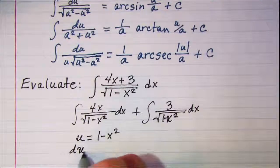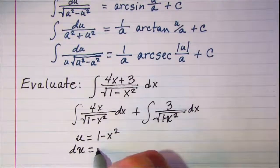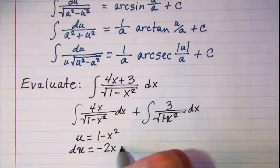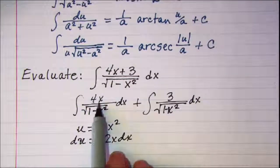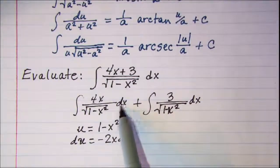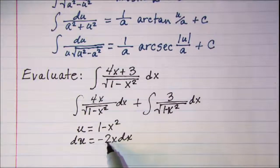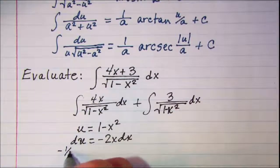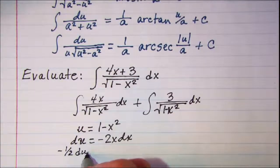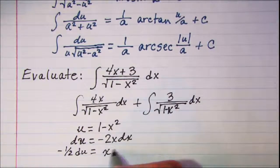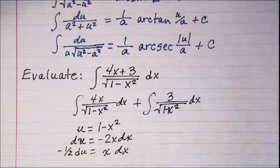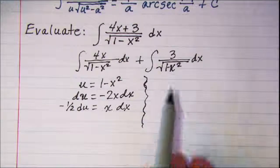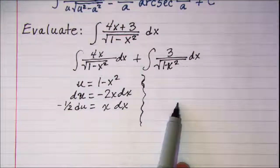So du is equal to negative 2x dx. So I have an x dx here, and let me go ahead and divide both sides by negative 2, so this is negative 1 half du is equal to x dx. I'll draw a separator here, because these two are two separate problems.